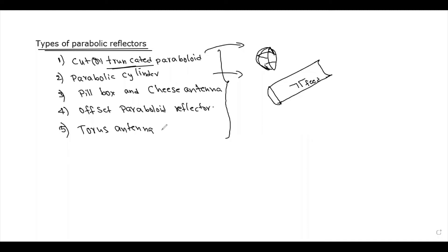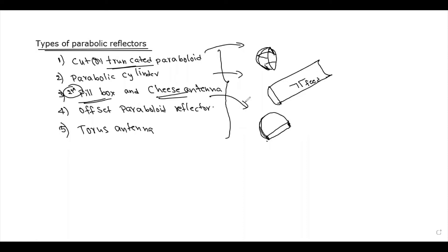The Pillbox antenna is also associated with the Parabolic Cylinder. The Pillbox is the main key shape. The Pillbox antenna — also called the cheese antenna — is a reflector antenna which has a cylindrical reflector enclosed by two parallel conducting plates.